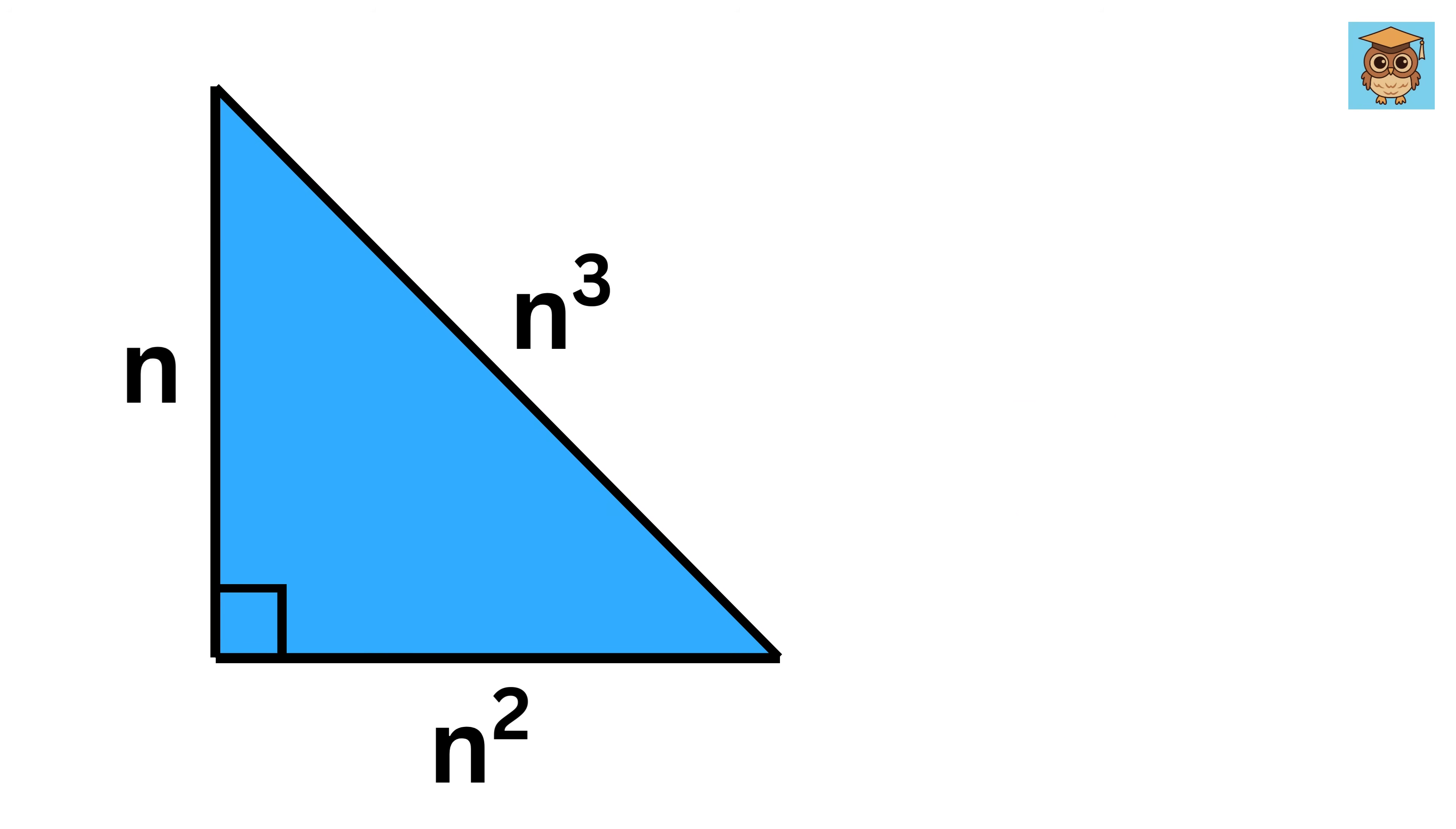We have this right triangle where the sides of this triangle are n and n square. And the hypotenuse, which is the side opposite to this right angle, is n cube.